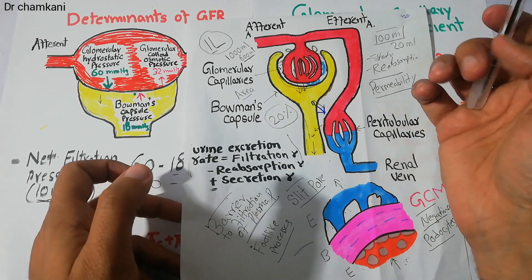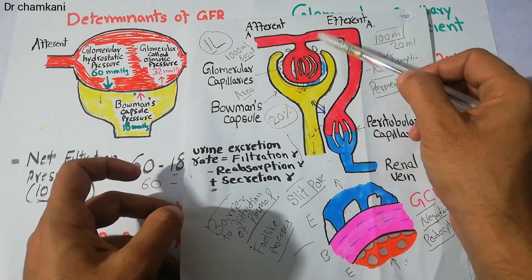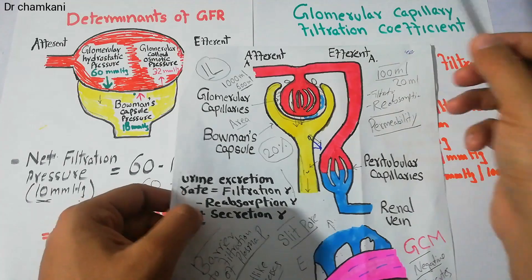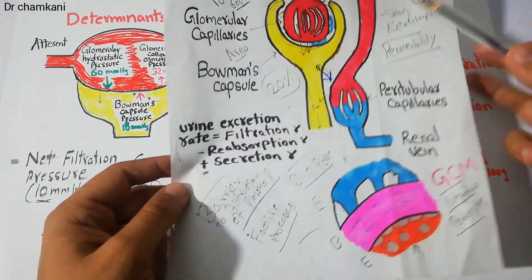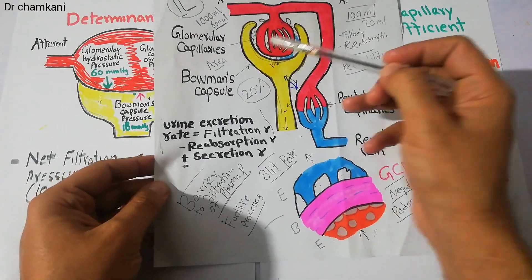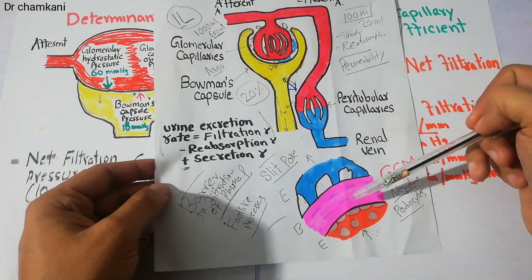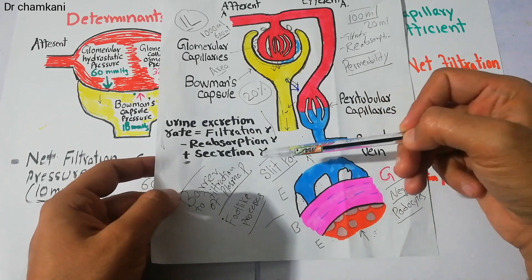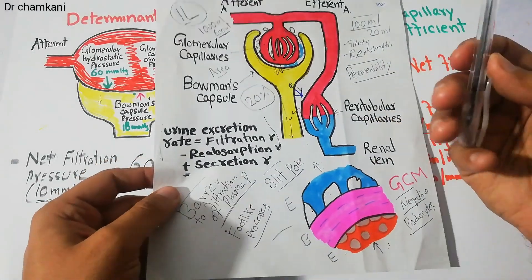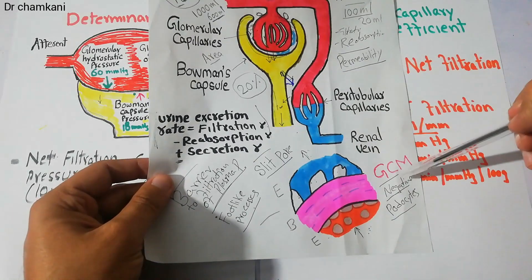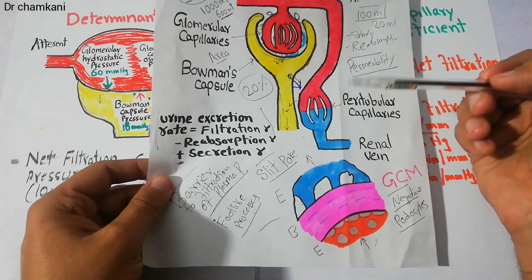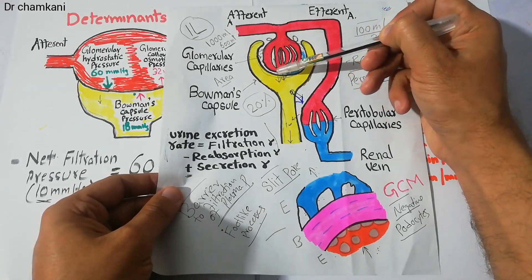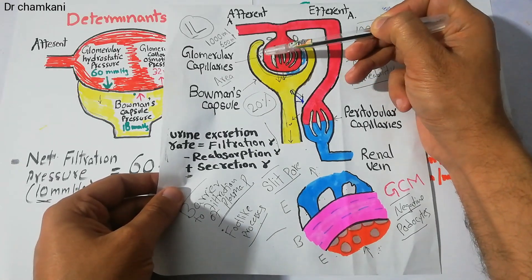Depending upon the chemical nature of the substances being filtered, many factors determine the rate of filtration — that is, the Glomerular Filtration Rate. Filtration occurs through the Glomerular Capillary Membrane, which has three layers, a negative charge, fenestrations, and slit pores. It acts as a barrier to plasma proteins but allows filtration of water and solutes. This membrane determines how filtration occurs and which substances, like plasma proteins, are prevented from being filtered.